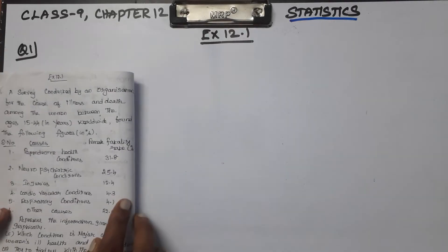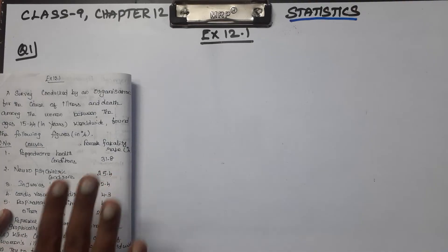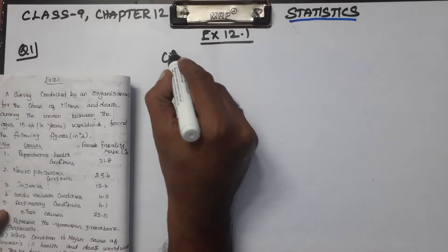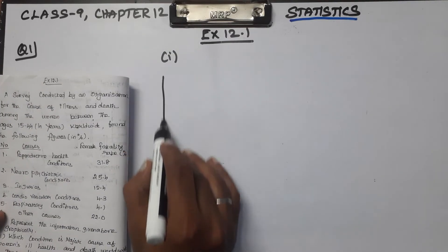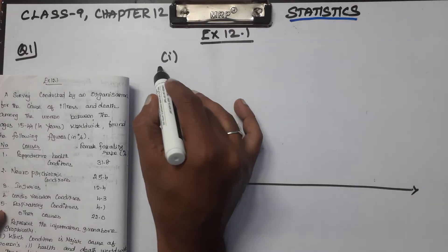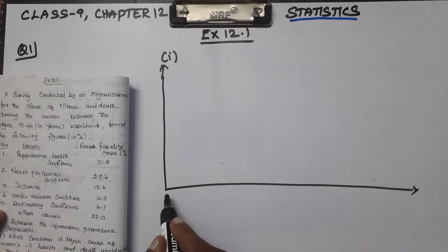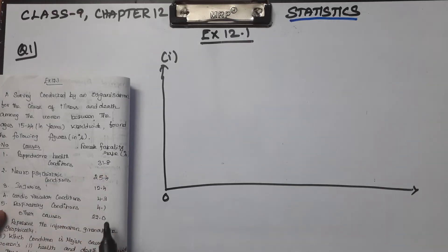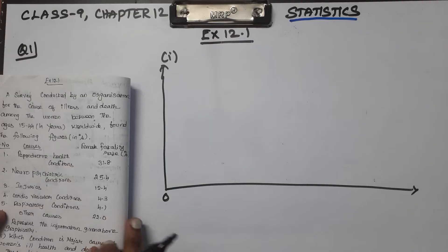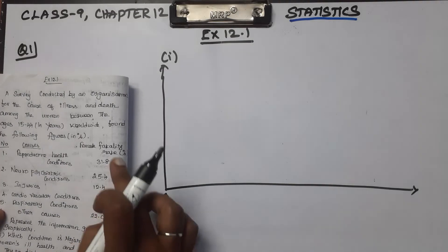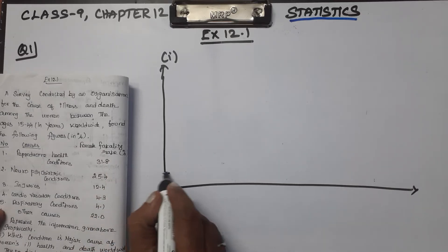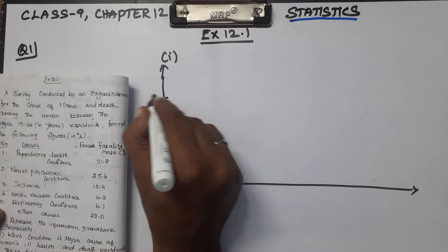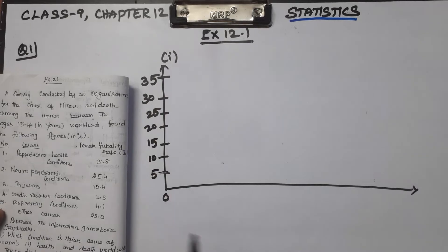So the first one is the data graph. On the right-hand side, we draw the graph with vertical and horizontal lines — this is the graph sheet. How do you do it? First, you find the exact axis. You find the highest point, which is 31.8, and we use 5 units per interval.